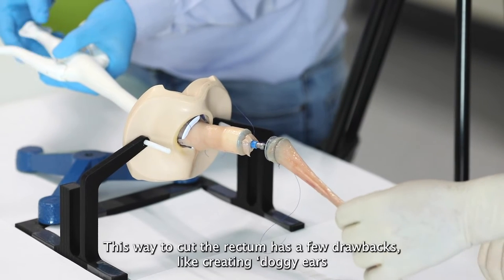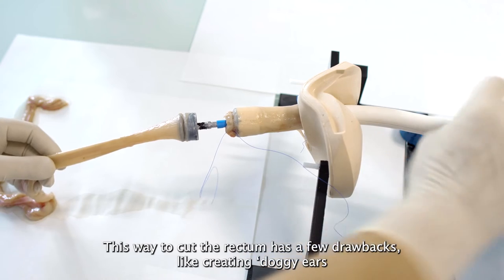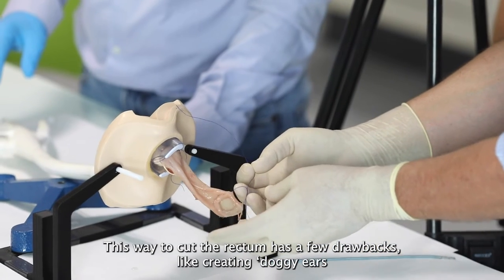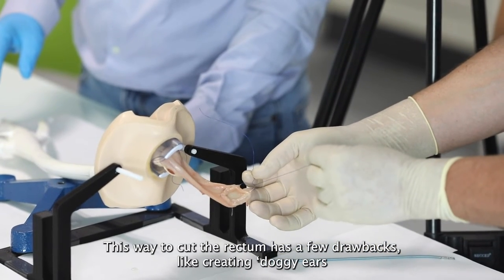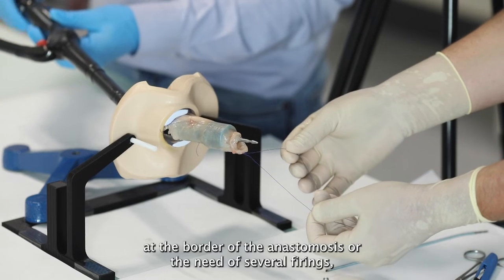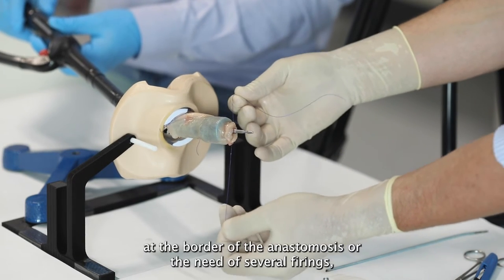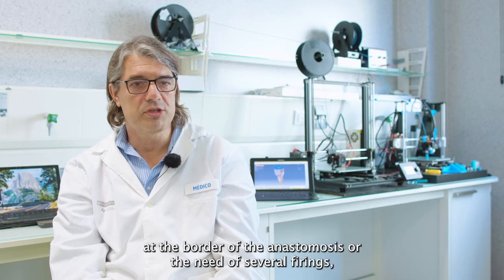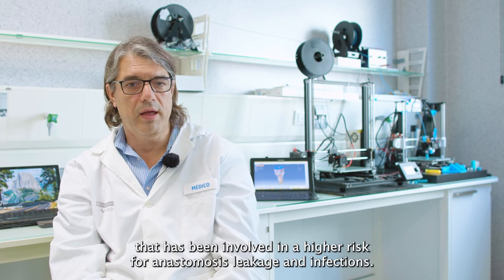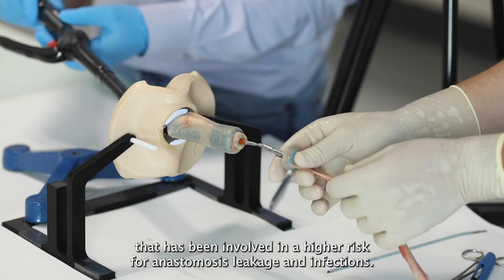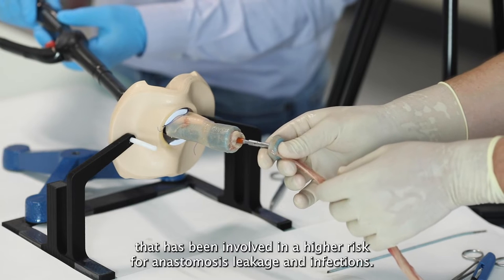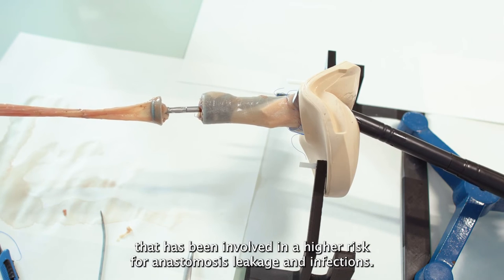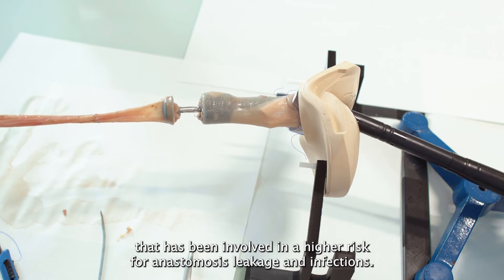This way to cut the rectum has a few drawbacks, like creating dog ears at the border of the anastomosis, or the need for several firings that has been involved in a higher risk for anastomotic leaks and infection.